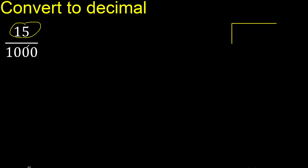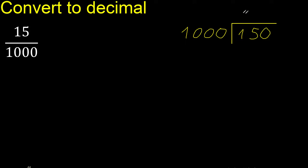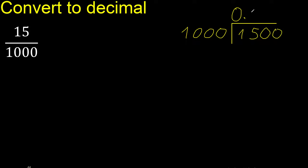15 divided by 1000. 15 is less than 1000, therefore complete — always complete with 0 here, 0 point. 150 is less, therefore 0 — 0 point is here.